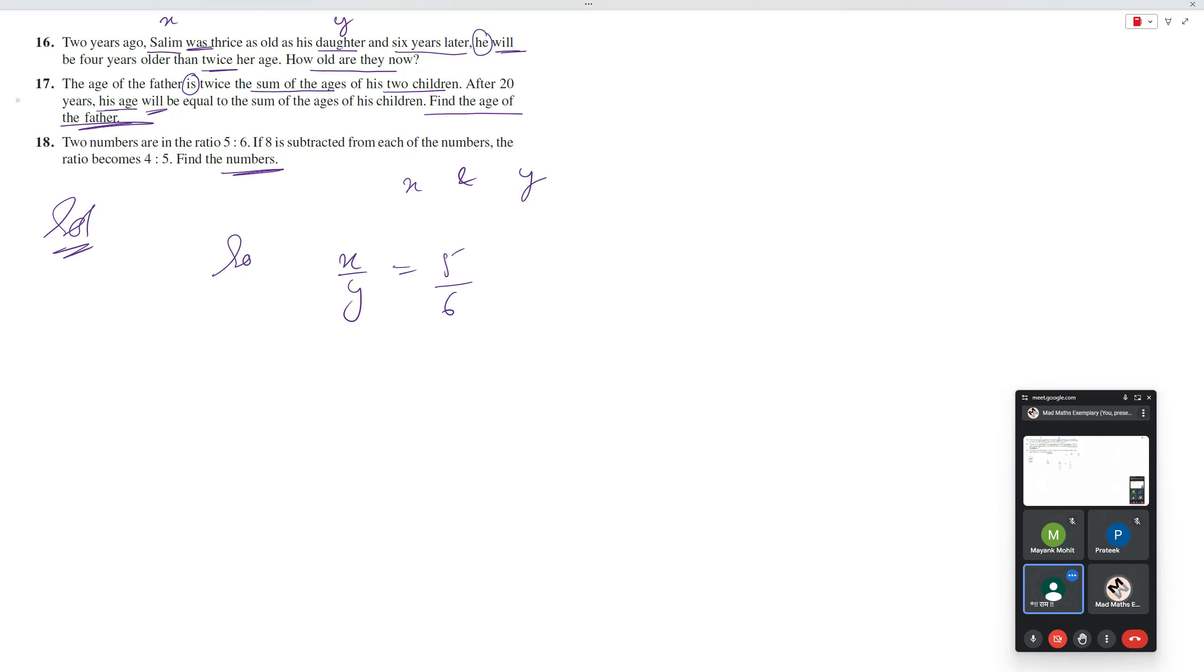8 is subtracted from each of the numbers, the ratio becomes 4 is to 5. 8 is subtracted from each, from x and y. To aapko mil jayega kya? x minus 8 and y minus 8. Aapkin ka ratio kya hai? 4 is to 5.